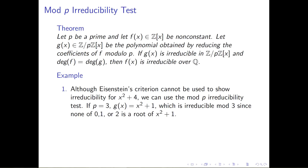Two subtleties to point out. First, don't reduce the exponents modulo p as well — only reduce the coefficients. For something like x to the fourth plus 4, you would not reduce it to x plus 1. The proper way to reduce x to the fourth plus 4 modulo 3 is x to the fourth plus 1, not x plus 1.